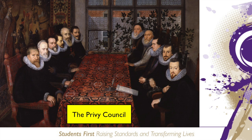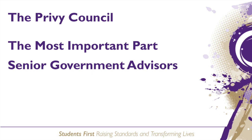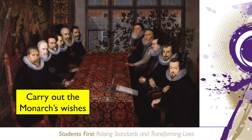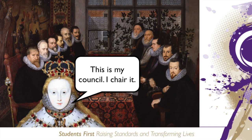Our last key feature was that of the Privy Council — this was the most important part of government. It was made up of key courtiers as well as senior government advisors, such as the Secretary of State, like Sir William Cecil. There were approximately 19 members of the Privy Council, meeting around three times a week. Their main role was to carry out the monarch's wishes, but they also provided advice and debated current issues. They also oversaw Parliament, and meetings of the Privy Council were chaired by the monarch.